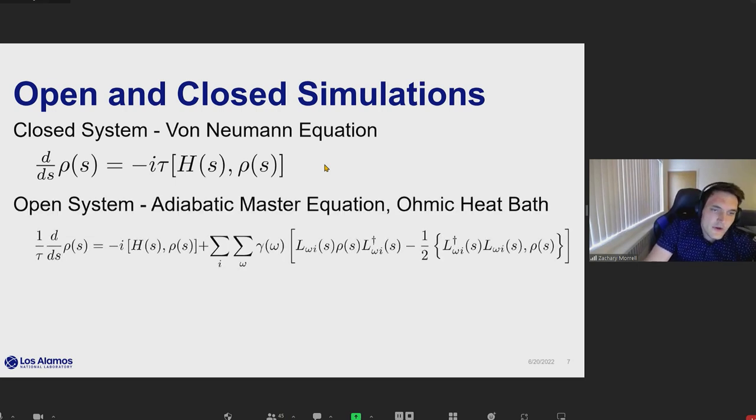For the open system case, we were considering the adiabatic master equation with independent ohmic heat baths. The adiabatic master equation effectively has this Liouville-Von Neumann term and then a correction term, which is dependent on these ohmic heat bath terms given by gamma, which have a certain bath coupling strength hidden within it. That's what I mean when I'm saying that we're doing closed system and open system simulations.